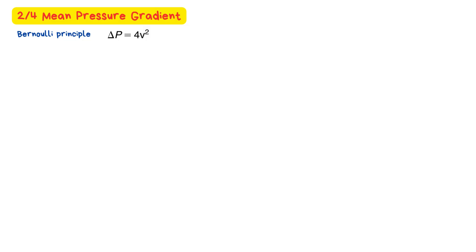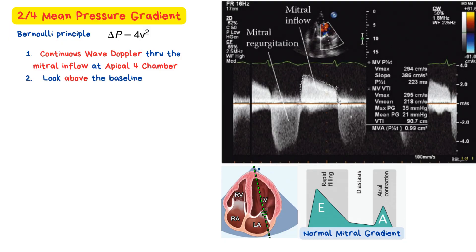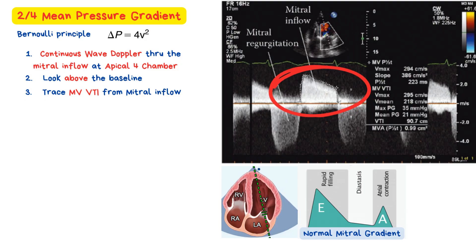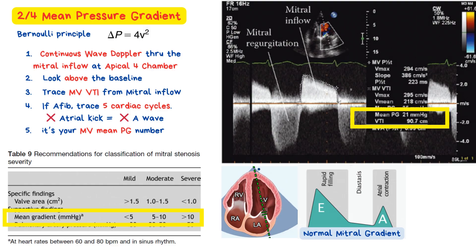Next, let's look at the pressure gradient across the mitral valve, calculated by the machine using the Bernoulli principle. Using continuous wave Doppler with the cursor through the mitral inflow from the apical four-chamber window, look above the baseline since blood flows toward your probe from the left atrium to the left ventricle. Freeze the clip and trace the mitral valve velocity time integral (MVVTI) to obtain both the MVVTI and mean pressure gradient. It's important to report heart rate since gradient measurements are flow-dependent. If the patient is in atrial fibrillation, average 5 cardiac cycles — there will be no A-wave, just irregular passive flow patterns. In our example, the mean pressure gradient is 21 mmHg, falling in the severe mitral stenosis range. A mean gradient <5 mmHg is mild, 5–10 is moderate, and >10 is severe.